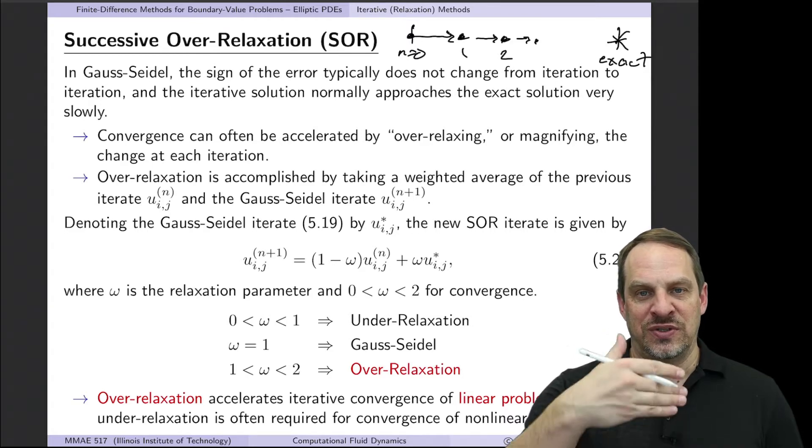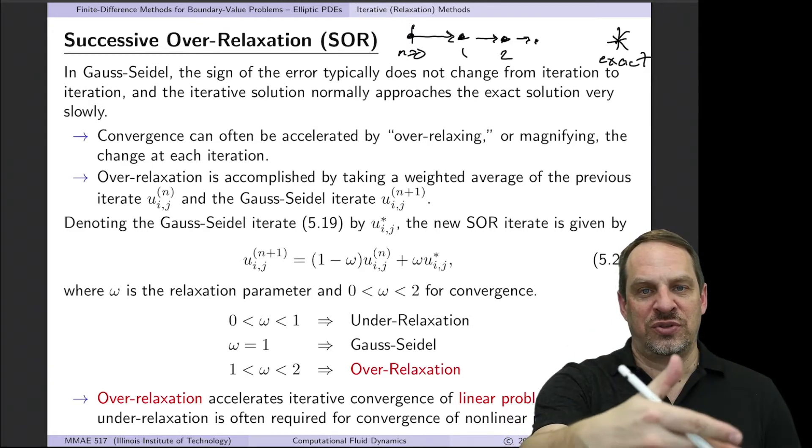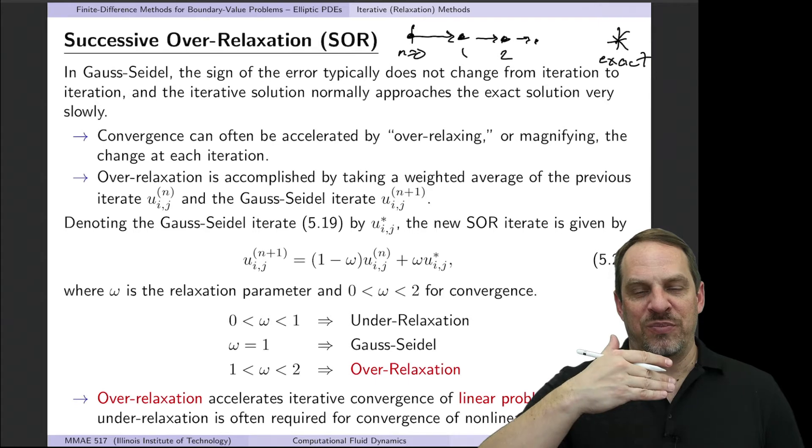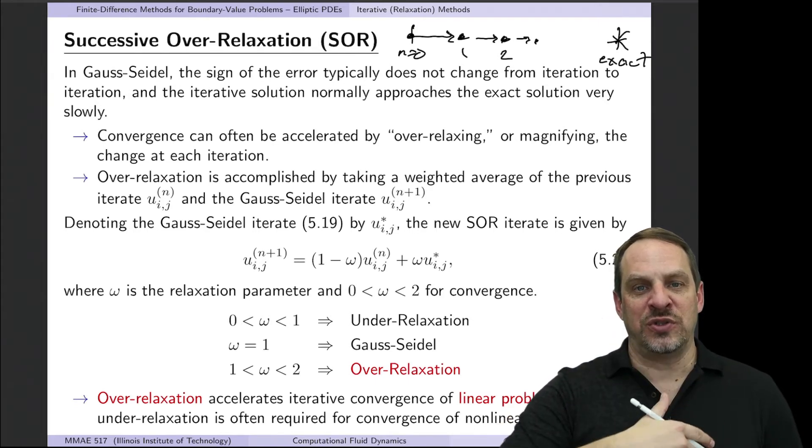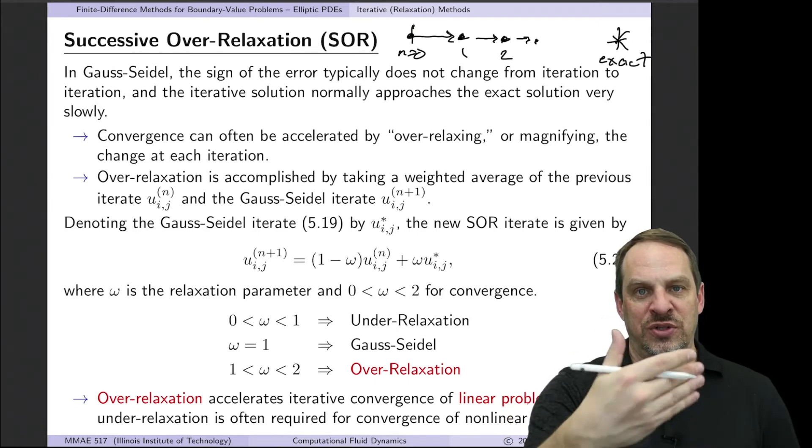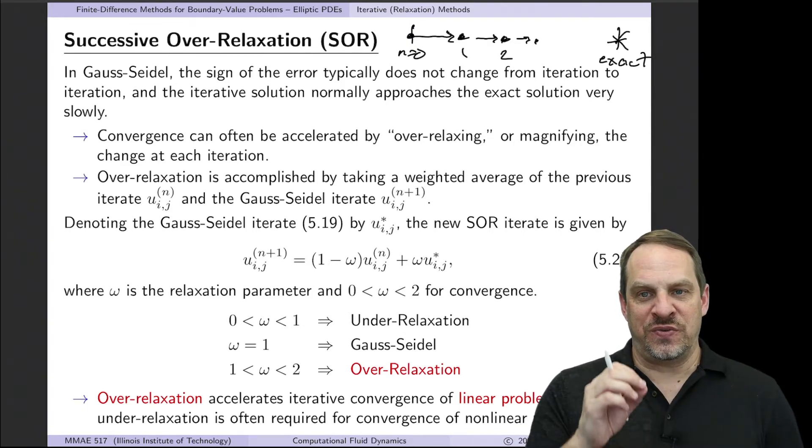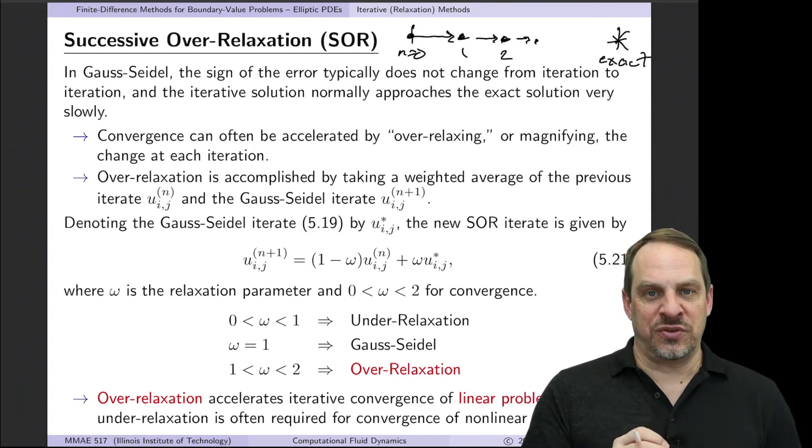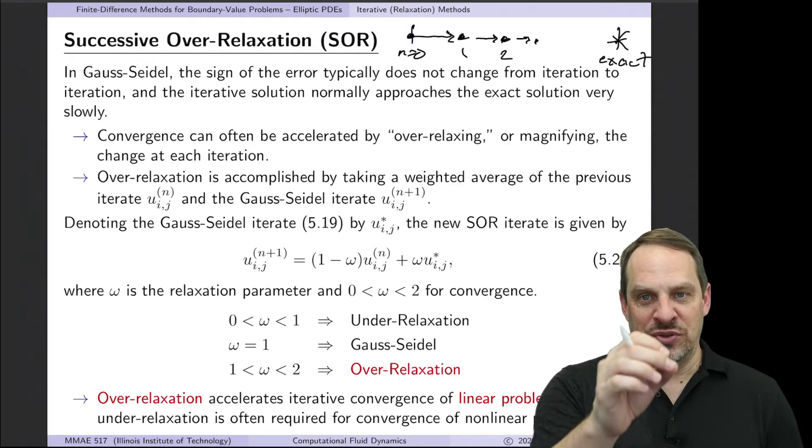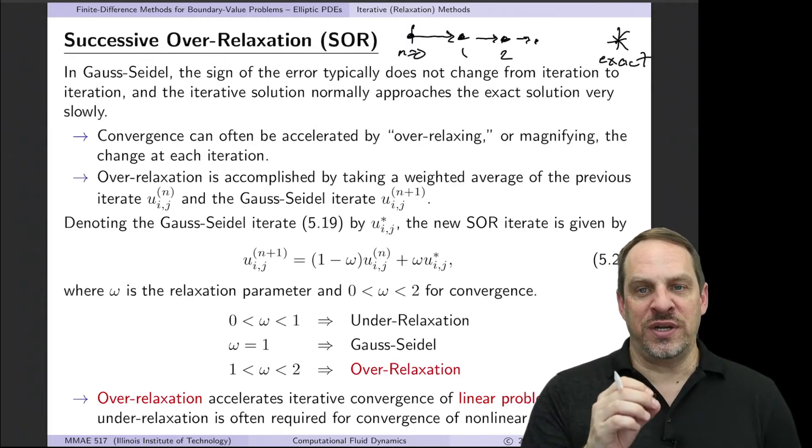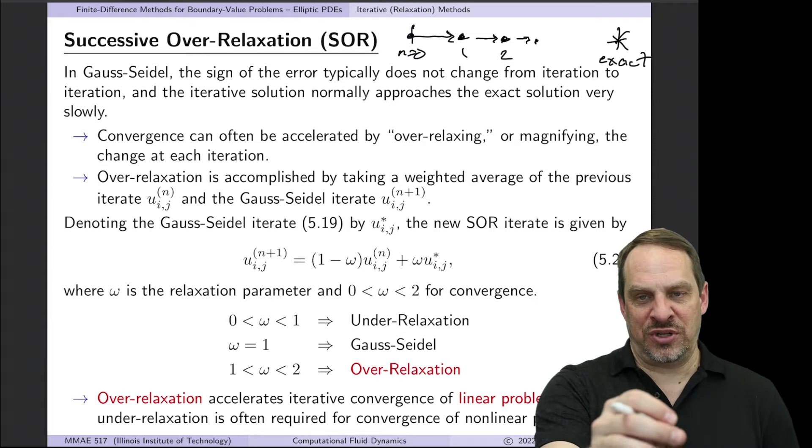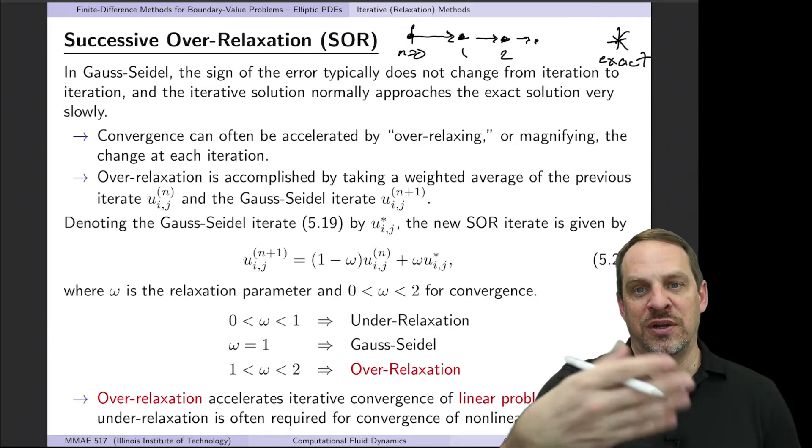You can think of taking steps. Each iteration is a step closer to the exact solution, and those steps are relatively small, which is why we need so many iterations for it to converge iteratively to the correct solution. So the idea behind SOR is if I know that the direction of Gauss-Seidel is correct, but the magnitude is too small, I'm being too conservative, why not take a bigger step in that particular direction each iteration, and I'll get there faster.